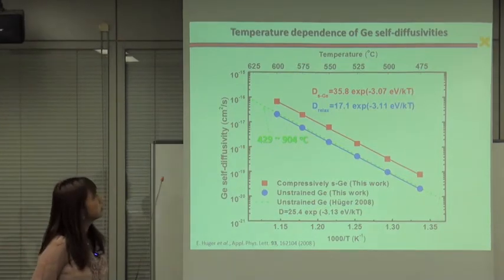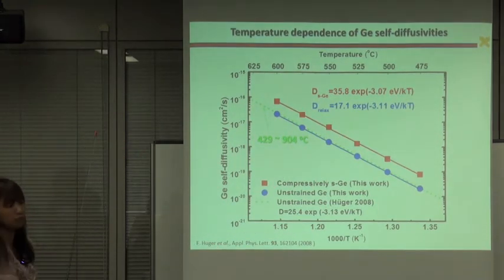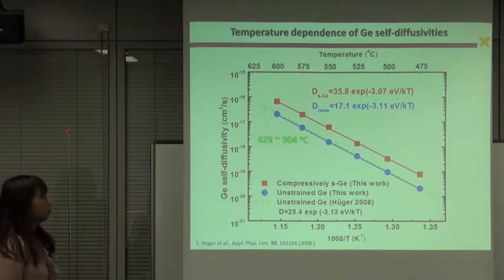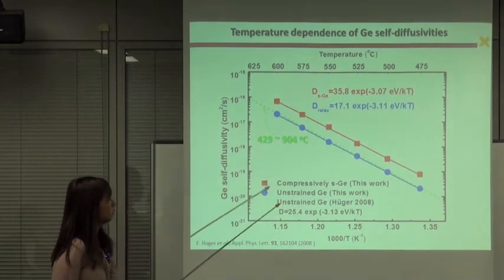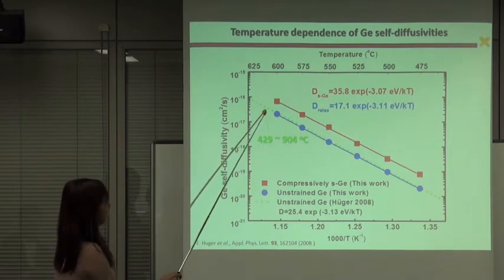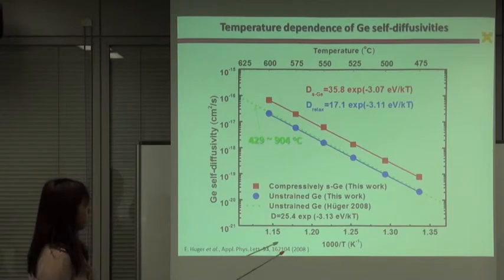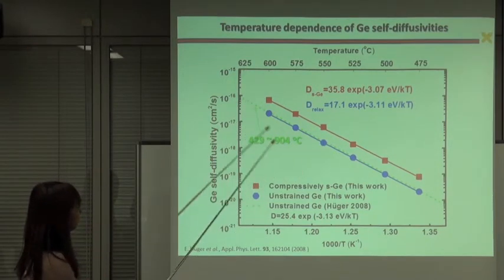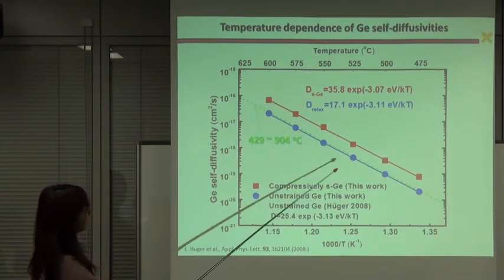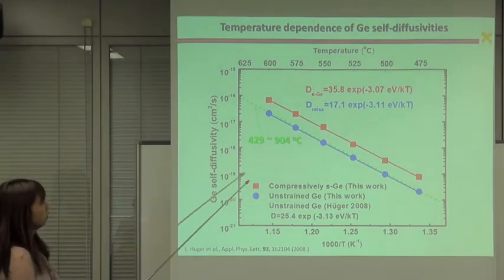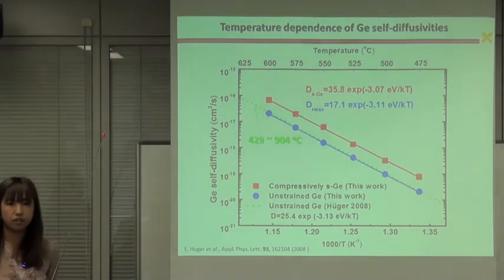And the same processes took place in the temperature range of 475 to 600 degrees Celsius. And this is the temperature dependence of germanium self-diffusivity based on Arrhenius expression. And this blue is the result for unstrained germanium obtained in this work. And the green dashed line corresponds to the result for unstrained germanium reported in 2008. And our values are fully consistent with the reported values. On the other hand, the red symbols show the results for compressive strained germanium obtained in this work. And germanium self-diffusion in compressive strained germanium is enhanced in the entire temperature range which we employed for the study.